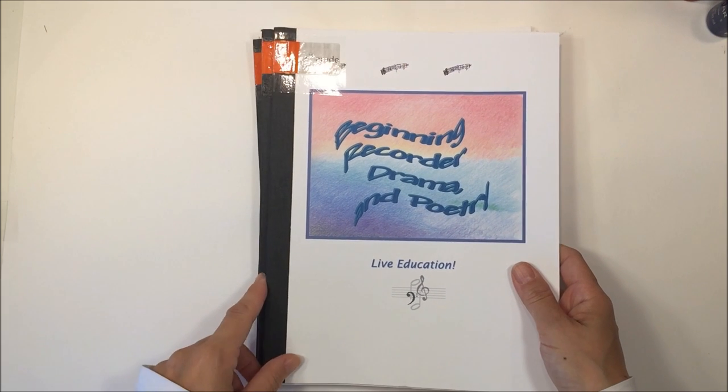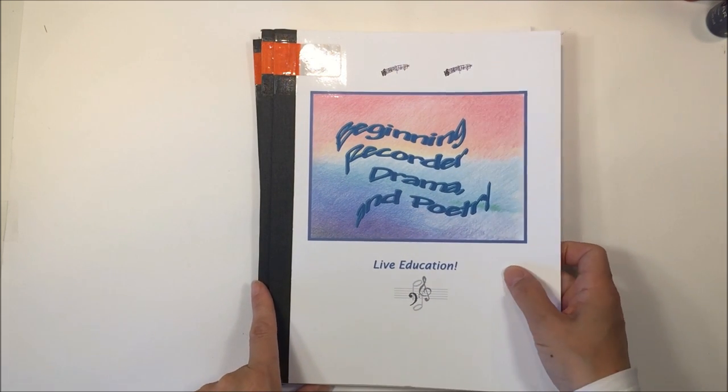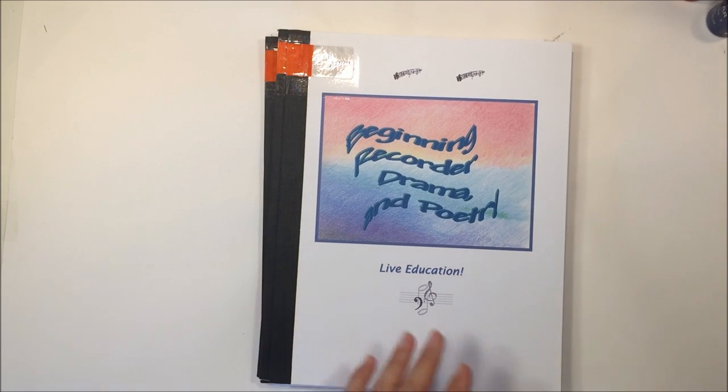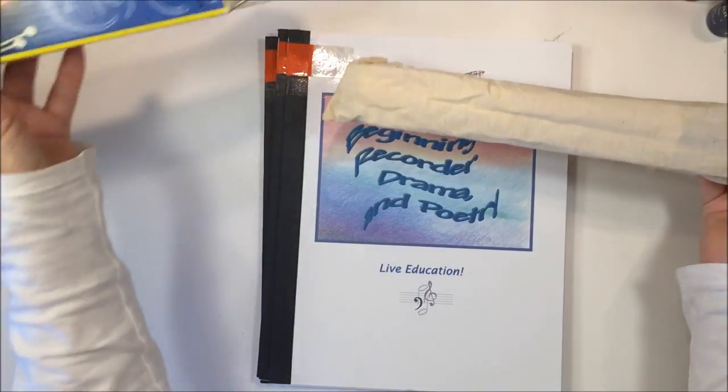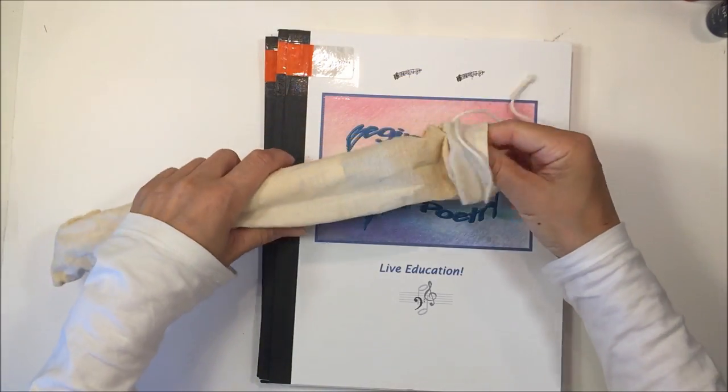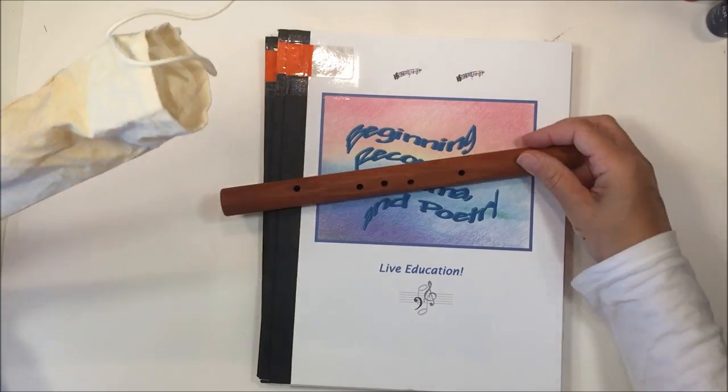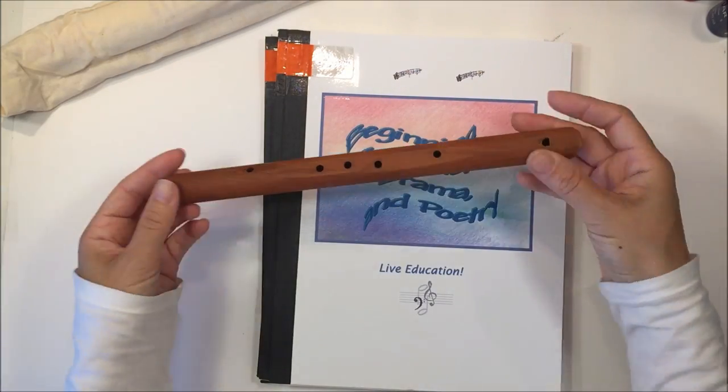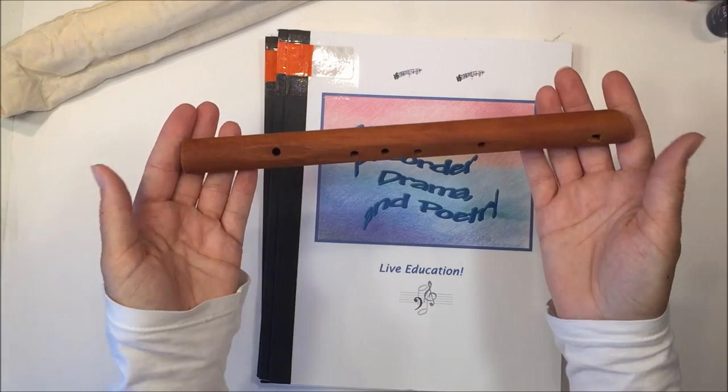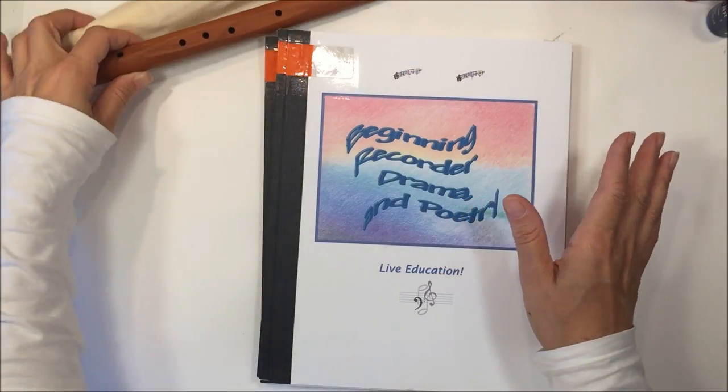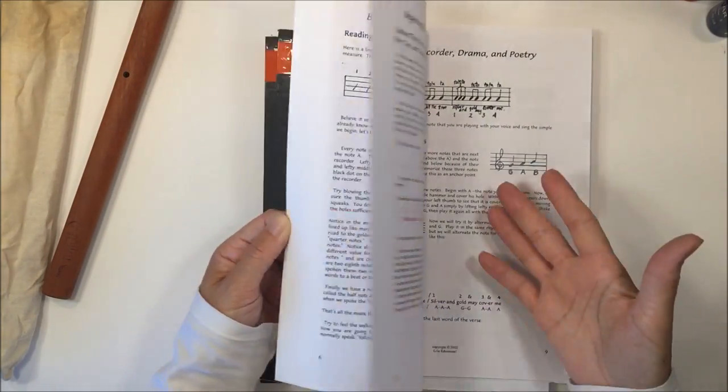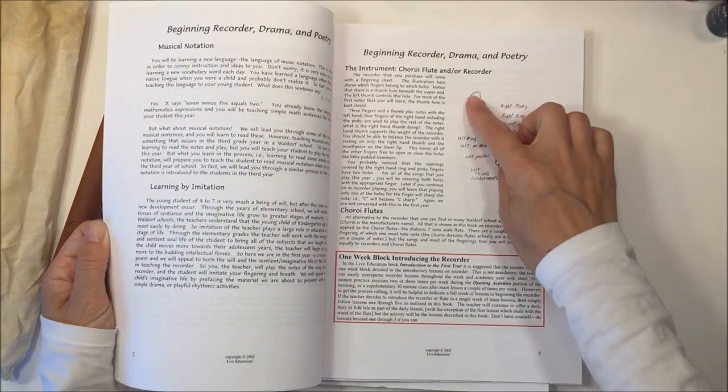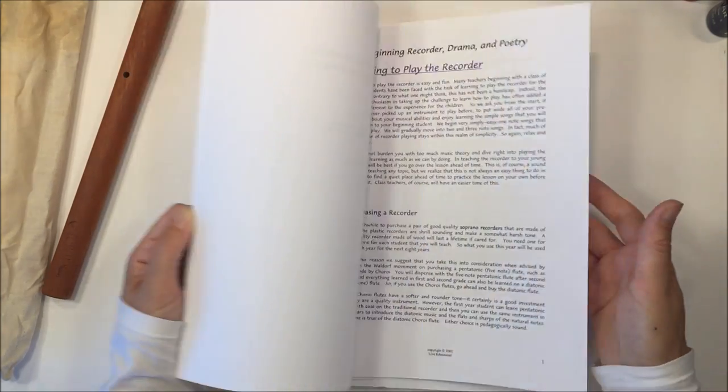The next book is Beginning Recorder Drama and Poetry. One of the supplies that I recommend you getting is a recorder. This one is really beautiful. Over the years, we haven't done music in our homeschool the way I had intended to do it. But this is a really beautiful recorder. You could use a really simple one that goes along with this curriculum. It's really simple. So even if you didn't know how to, yourself as a parent, read music or play the recorder, it's super simple so that you could learn how to do it.